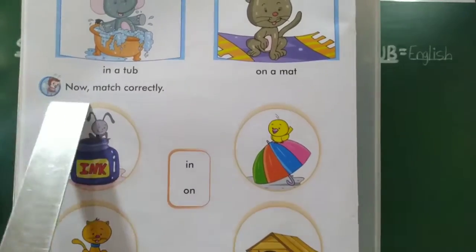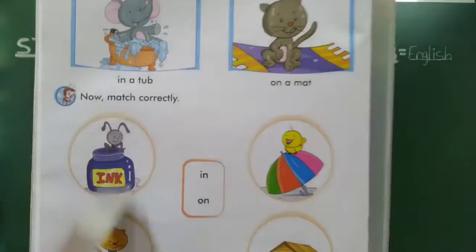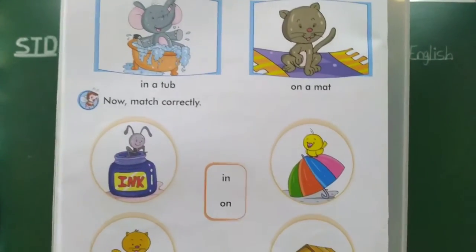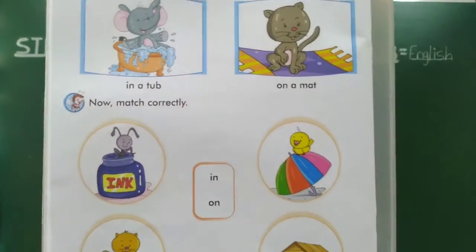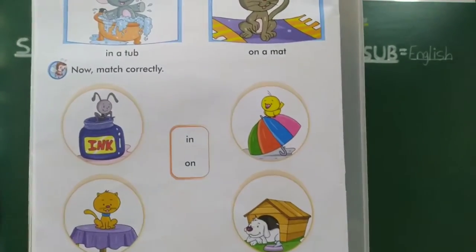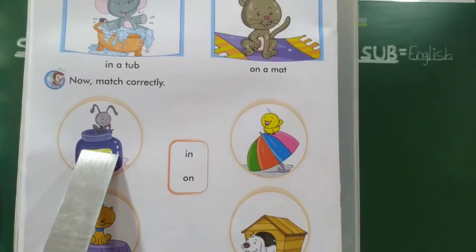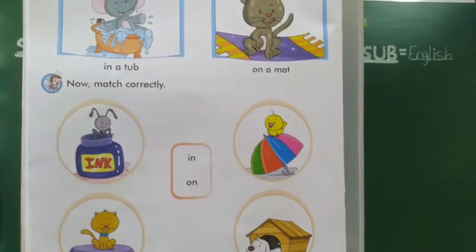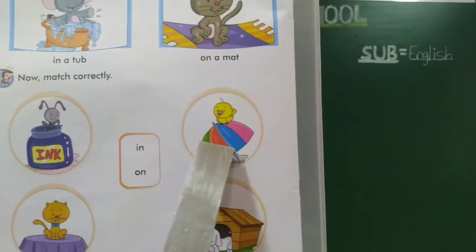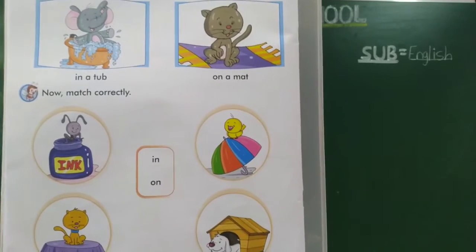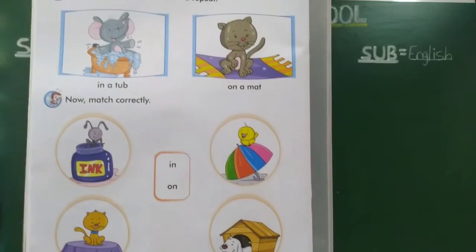Next baga taa. Now match correctly. Aat baang aahe? Kishaat svetla aahe — in the ink pot. Ink pot, in the ink pot. Ata hai bagha umbrella cha varti kone ahi? Bird. Umbrella cha varti ahi.